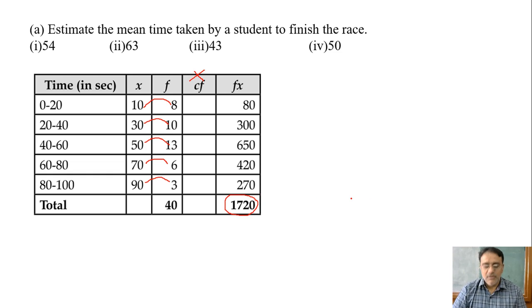So the formula for mean is summation fx upon summation f. So 1720 upon 40. You can divide it easily. 172 by 4 is 43. So the correct answer is third option. So this is the first question.